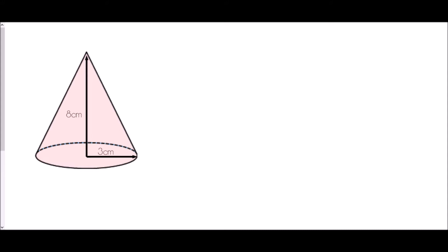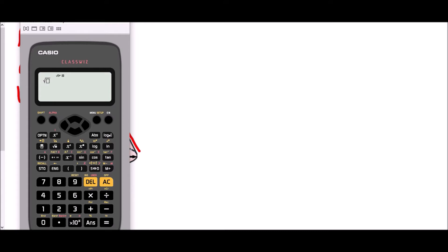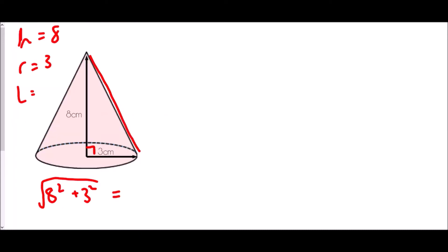We're going to find the total surface area of this cone. The first thing to remember is that this is a right-angle triangle, so we know h equals 8 and r equals 3, but we don't yet know l. Because this is a right-angle triangle, we need to use Pythagoras's theorem to find the hypotenuse: √(8² + 3²) = √73. At this point I'm going to leave it as √73 since I'll be typing in more information to get my final answer.